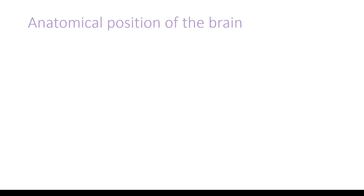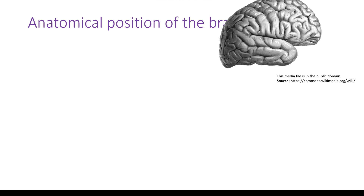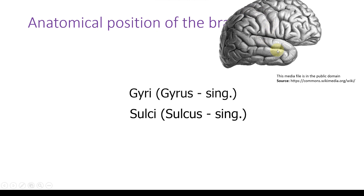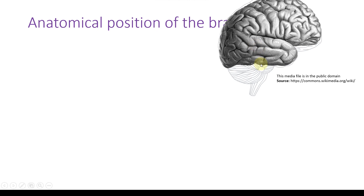First we'll go to the anatomical position of the brain. If you see the brain like this, this is a part of the cerebrum. You can identify it as a cerebrum by looking at these prominences and fissures — the bumps are called gyri and the fissures are called sulci. This picture does not have the cerebellum and the brainstem, but I'll add them in this line diagram: this is the cerebellum and this is the brainstem.